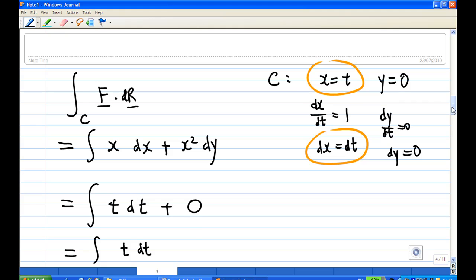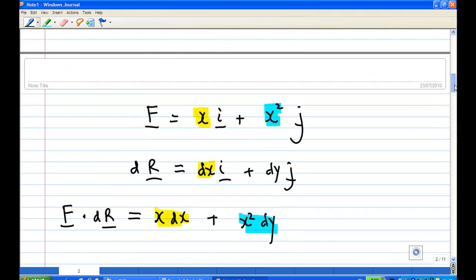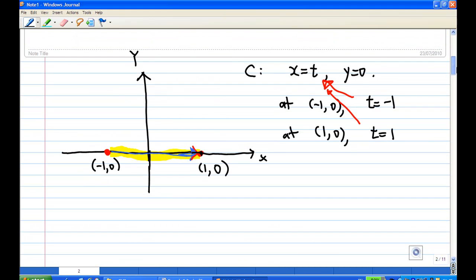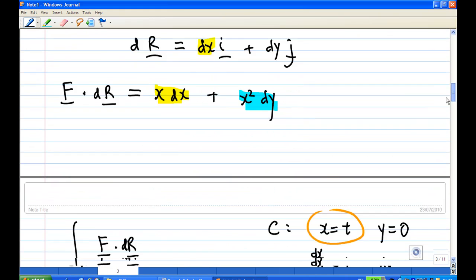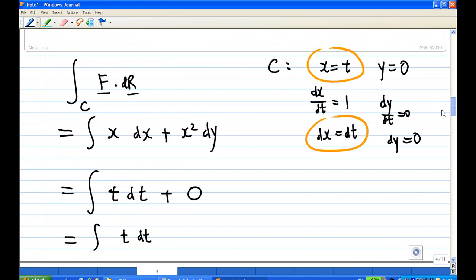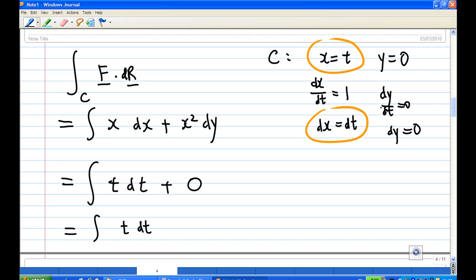And what is the limit of t now? We know from the earlier part that the point travels from (-1,0) to (1,0). At the point (-1,0), t is equal to -1. At the point (1,0), t is equal to 1. So the limit of t is from -1 to 1. So t from -1 to 1.